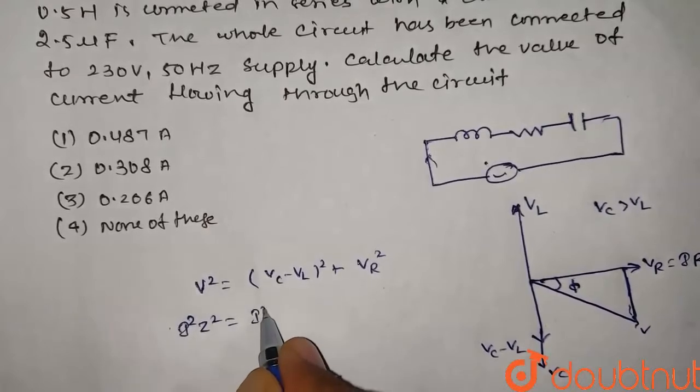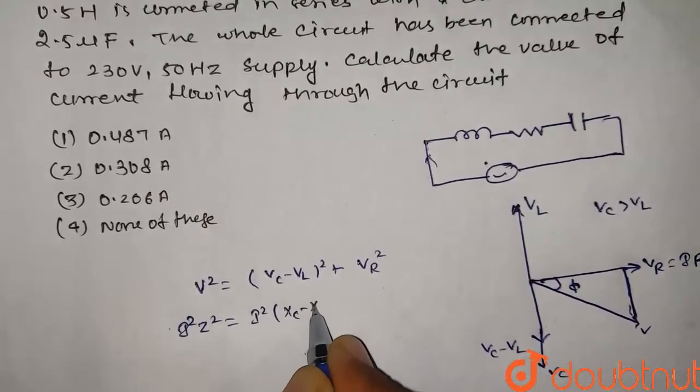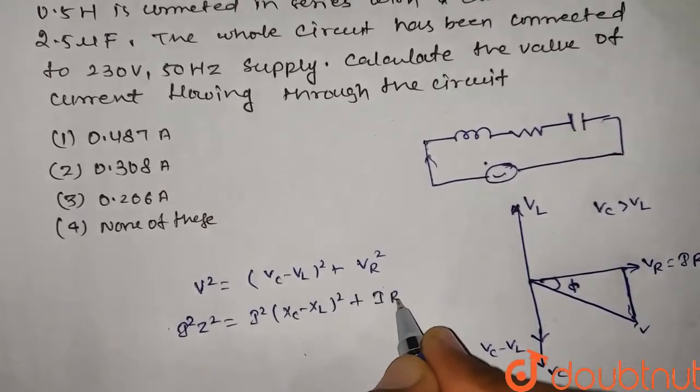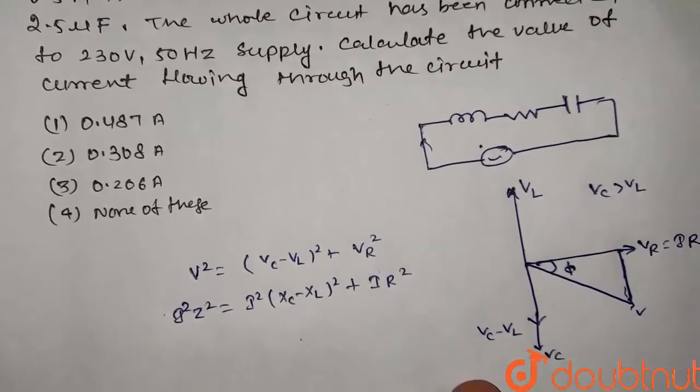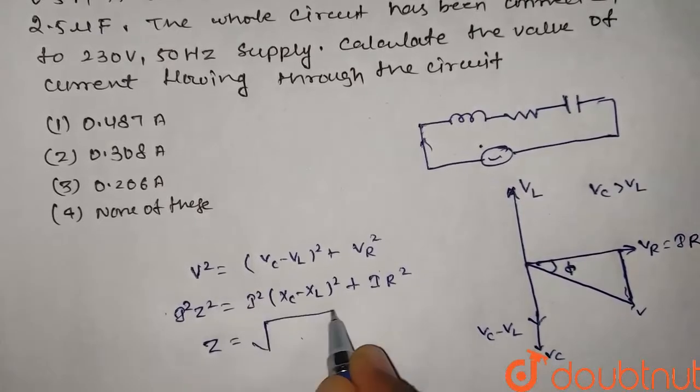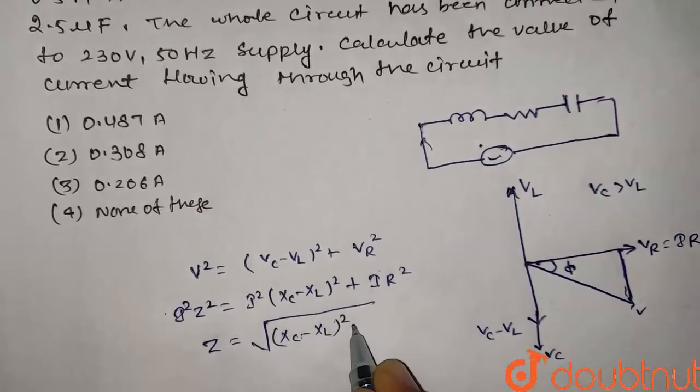I is same throughout, so I squared Z squared is equal to I squared times XC minus XL squared plus I squared R squared. Canceling I, Z is equal to square root of XC minus XL squared plus R squared.